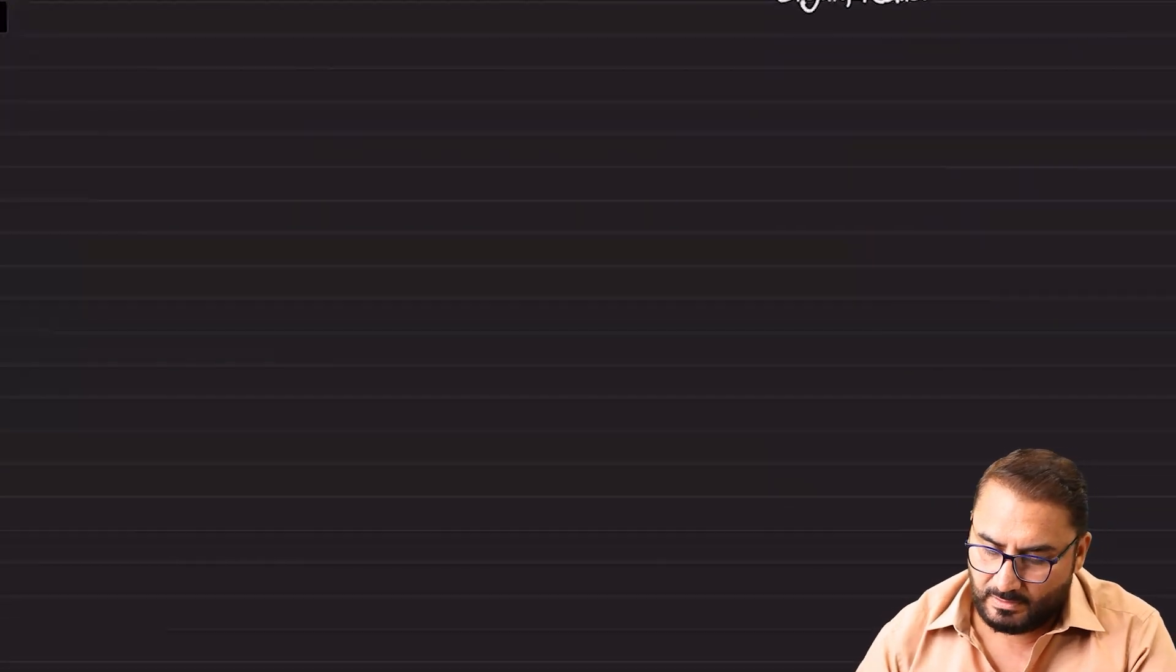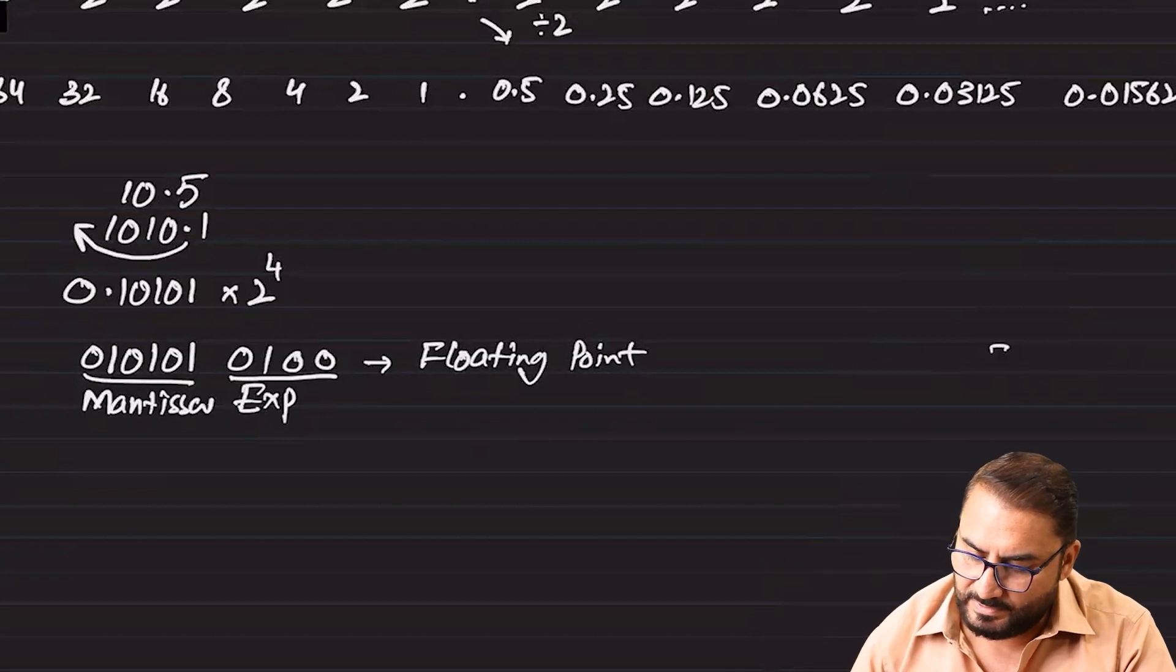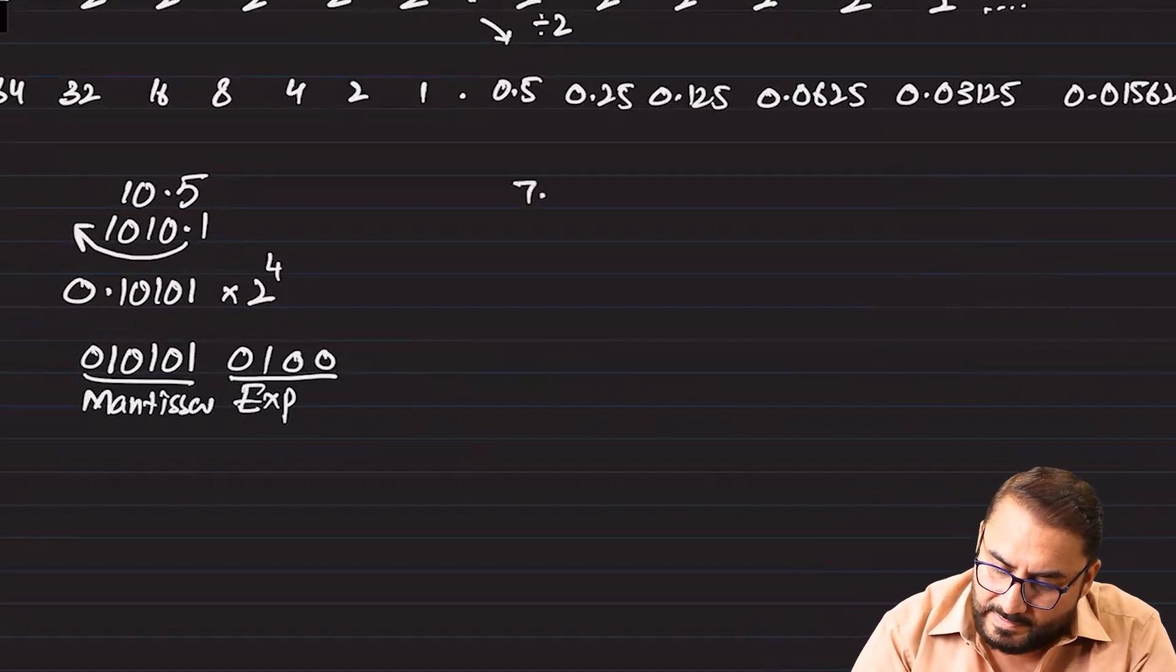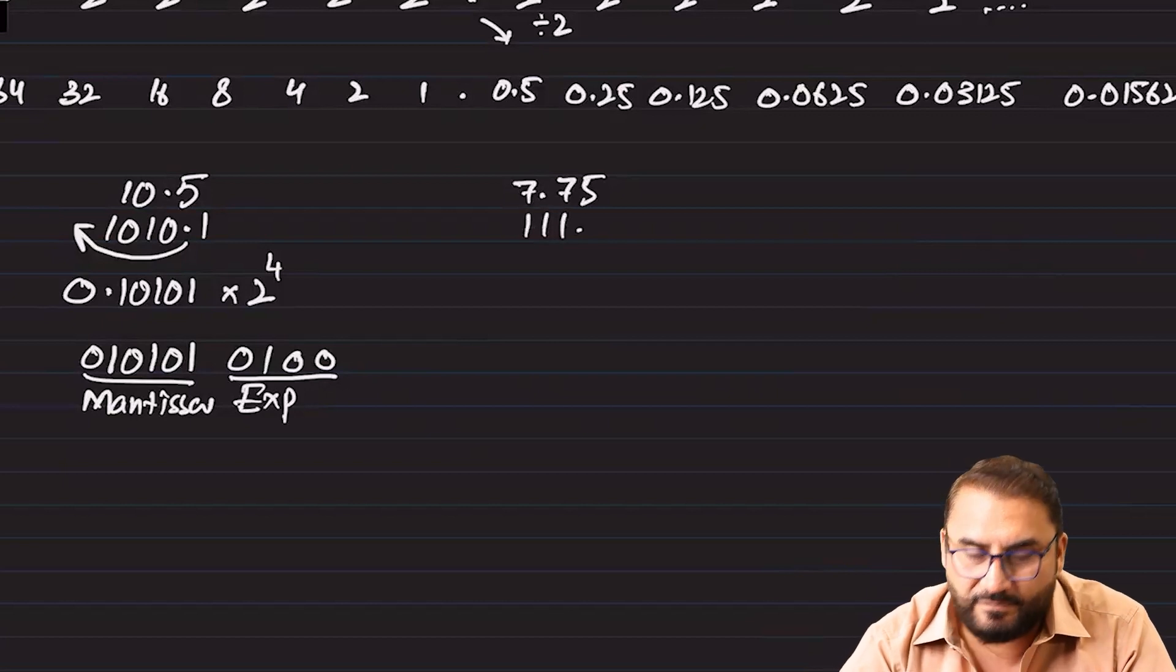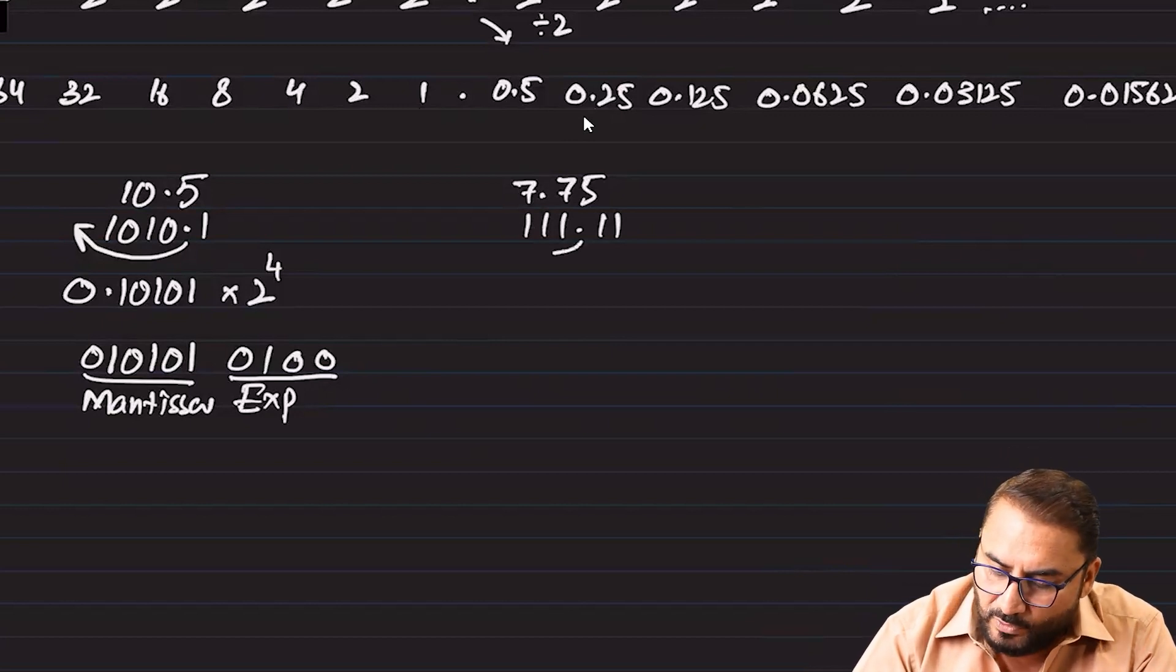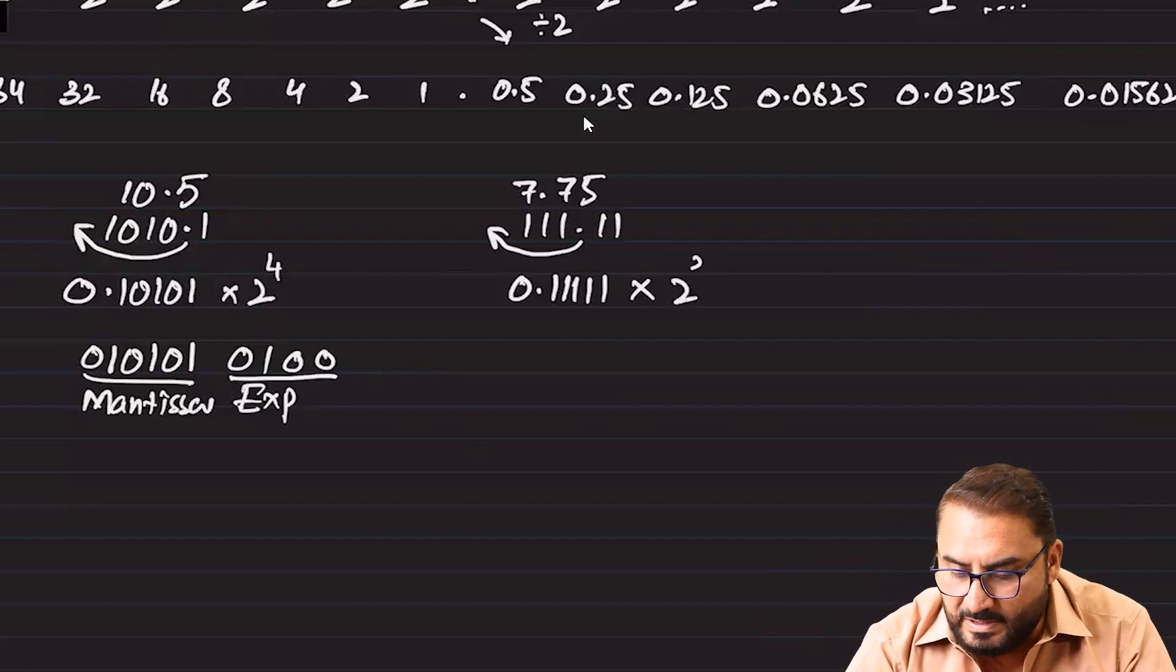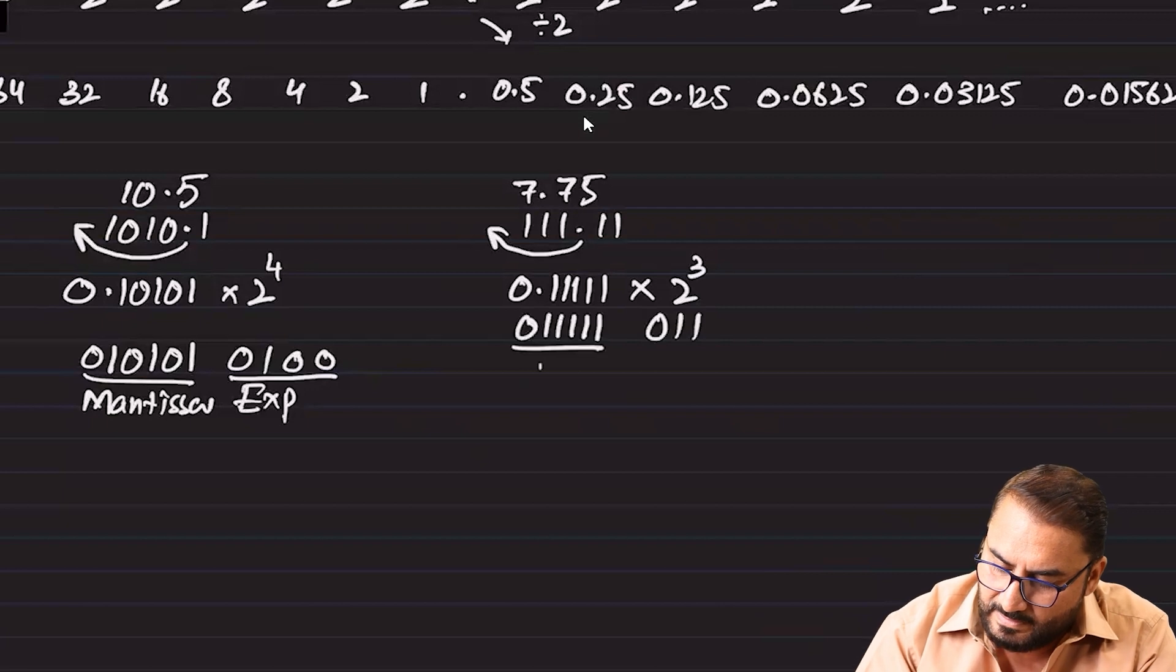Let's solve few of the questions. If it is 7.75, so 7 is 111, 4 plus 2 plus 1. 0.75 would be 0.5 plus 0.25, so this is 7.75. This is now the conversion from denary to binary. Now we will float the point out to find its general form or the standard form. So that is 0.111111 and how many times you have taken the point towards the left? 3. So this is 2 power 3. Now we will only save the mantissa and exponent in binary, so this would be 0111111 and 3. This is mantissa, this is exponent.